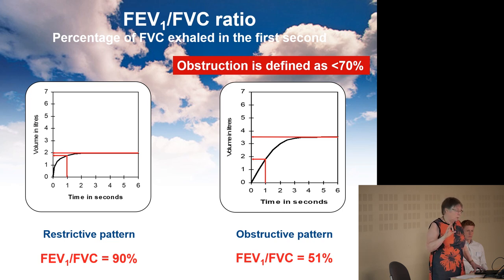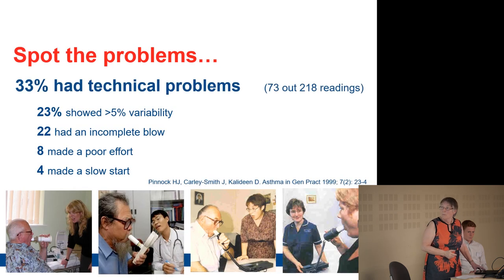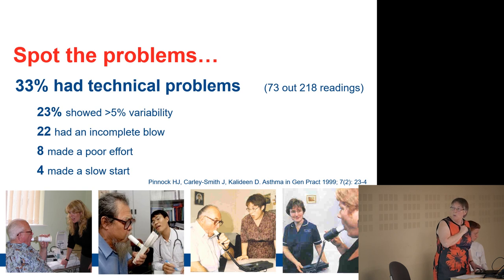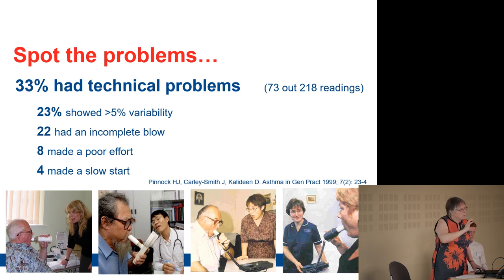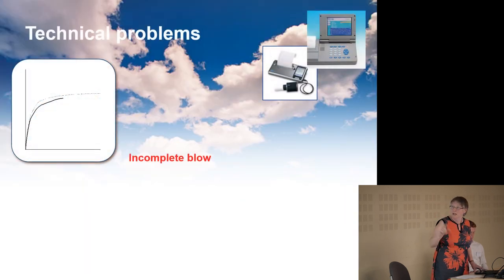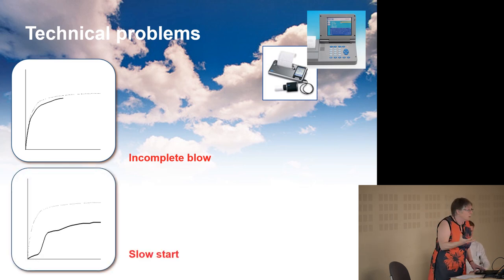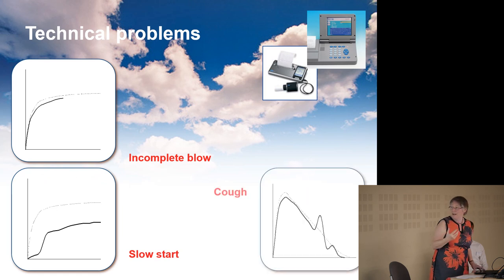I wanted to move on to look at quality problems with spirometry. When we did this in our practice after the first two or three years of using spirometers, quite a lot of challenging problems came up: not more than maybe one good blow, incomplete blows, not blowing for long enough, not quite getting started on the blow — hesitating at time zero — and a cough in the middle. These are the sorts of things you need to watch for, and I'm going to show you some real tracings.